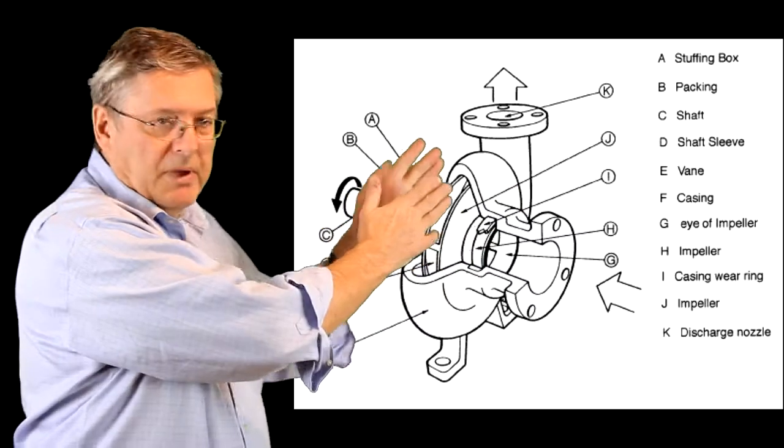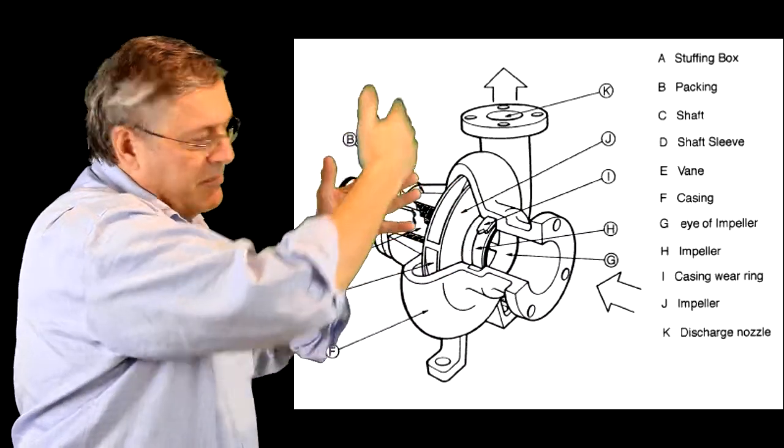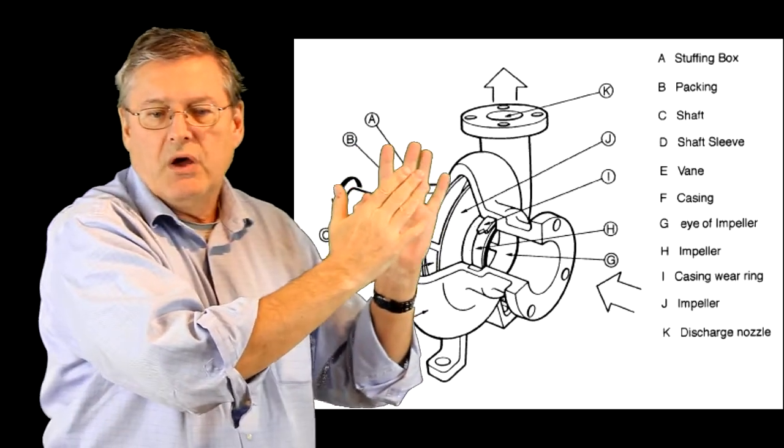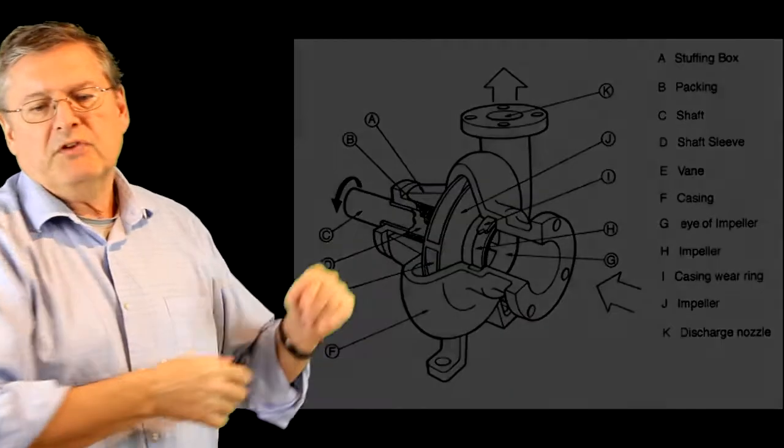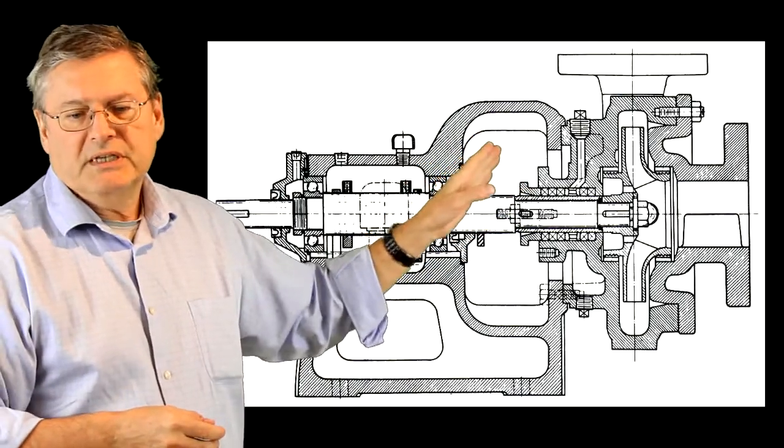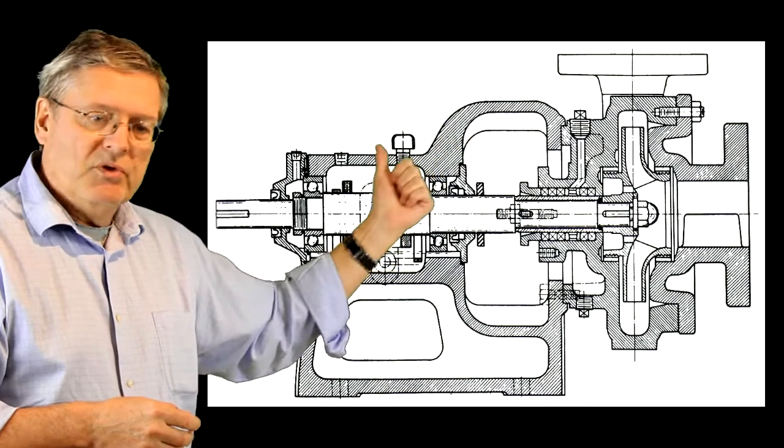Further in is the impeller and the veins that make up the impeller are sandwiched in between the two plates that are called the shrouds. Now in this cutaway view we see the impeller that's recessed in the casing and the seal a little bit further back.